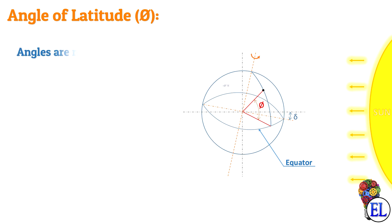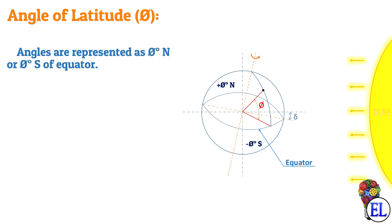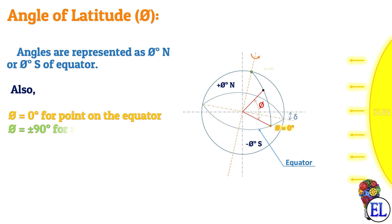Angles are represented as 5 degrees north or 5 degrees south of the equator. The value of phi is 0 degrees for a point on the equator, whereas values of phi are plus or minus 90 degrees for the north pole and the south pole respectively.